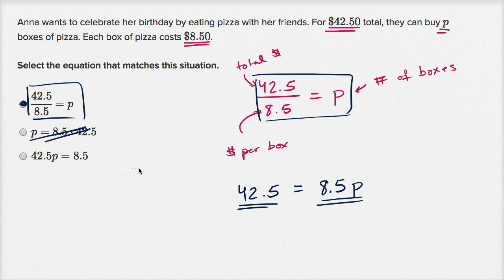And over here it looks kind of like this, except the p is on the wrong side. This has 8.5p is equal to 42.5, not 42.5p is equal to 8.5. And if we try to get the p on the other side here, you could divide both sides by p, but then you would get 42.5 is equal to 8.5 over p, which is not true. We have 8.5 times p is equal to 42.5, so this is not going to be the case.